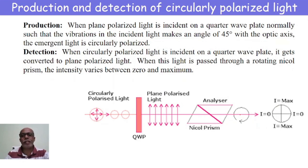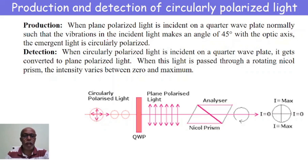Now coming to the production and detection of circularly polarized light. When ordinary light is made to pass through the Nicol prism, it undergoes double refraction. The ordinary ray undergoes total internal reflection and is eliminated, whereas the extraordinary ray is propagated having vibrations in the plane of the paper, and that is said to be the plane polarized light.